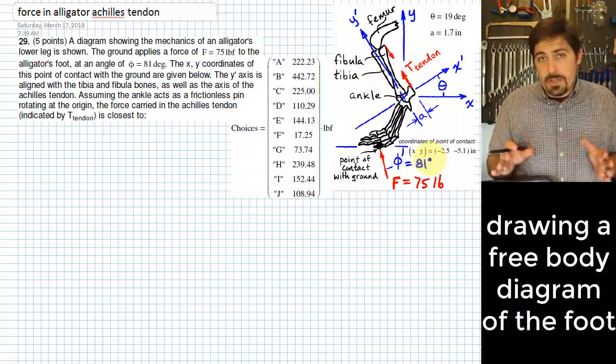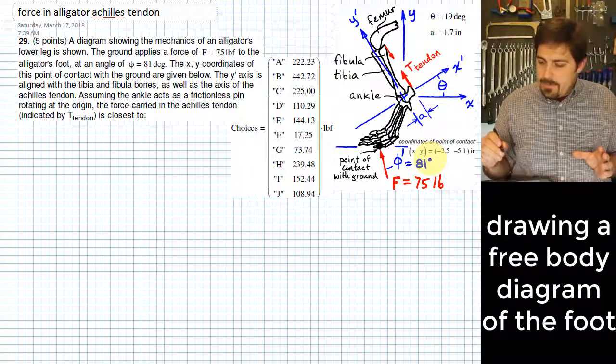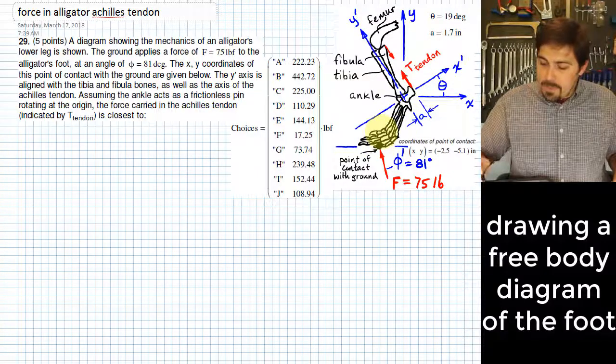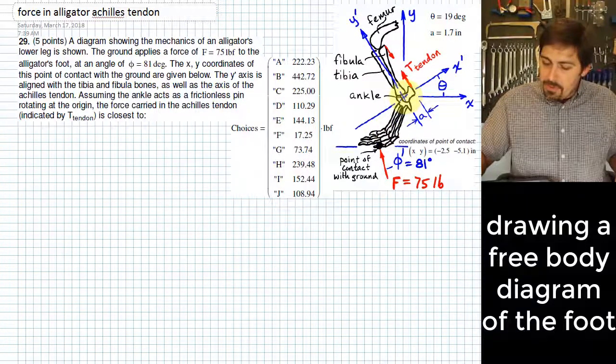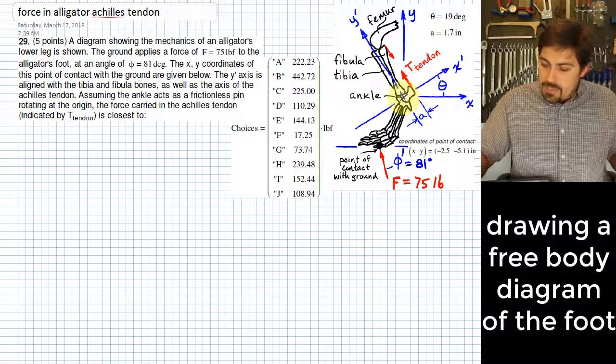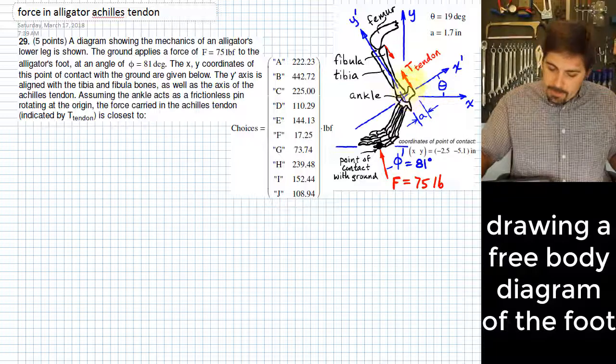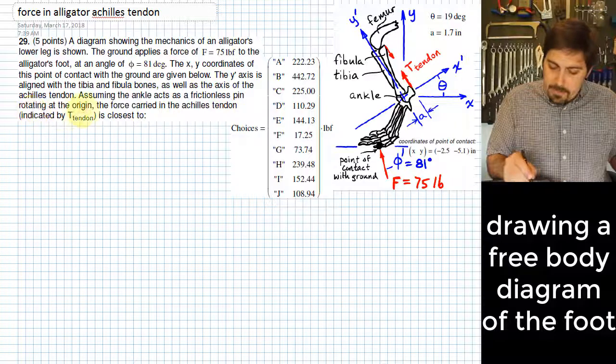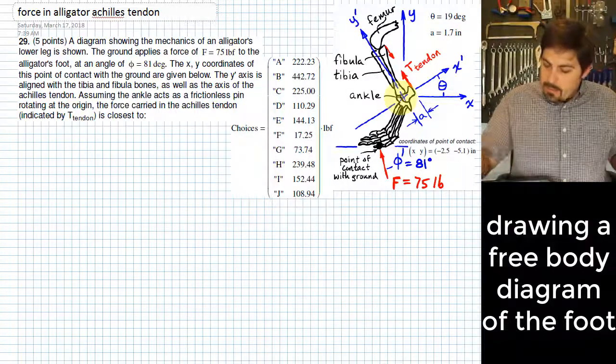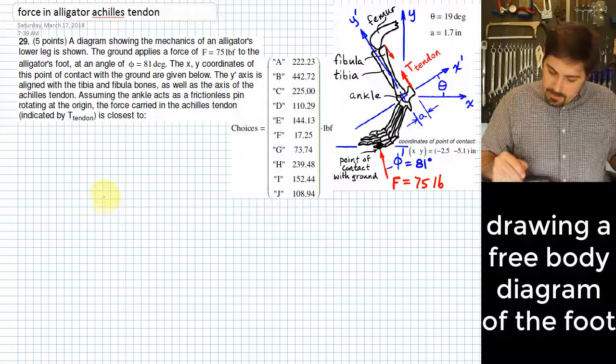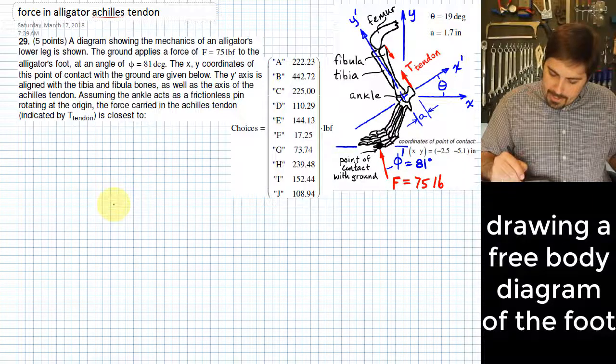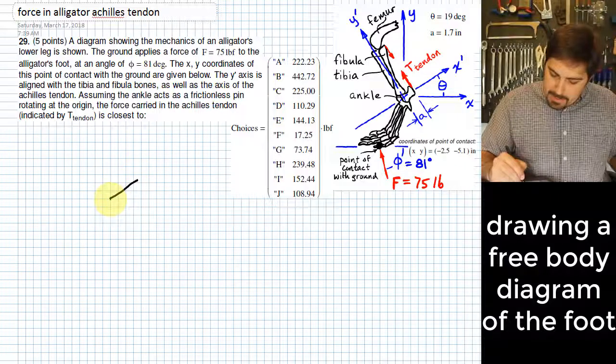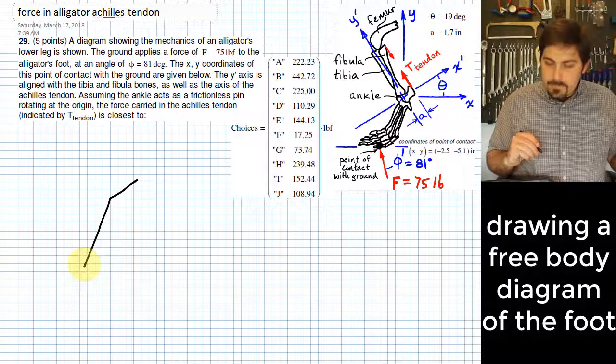What we want to do here is take a free body diagram and draw a free body diagram of the thing that matters here. We need to see here that the ankle of the alligator behaves just like a pin joint. As a matter of fact, it says that in here, assuming the ankle acts just like a frictionless pin rotating at the origin. Ultimately what that's going to look like is something like this, where we've got a portion of the foot that comes up like this and a portion that comes down like this.